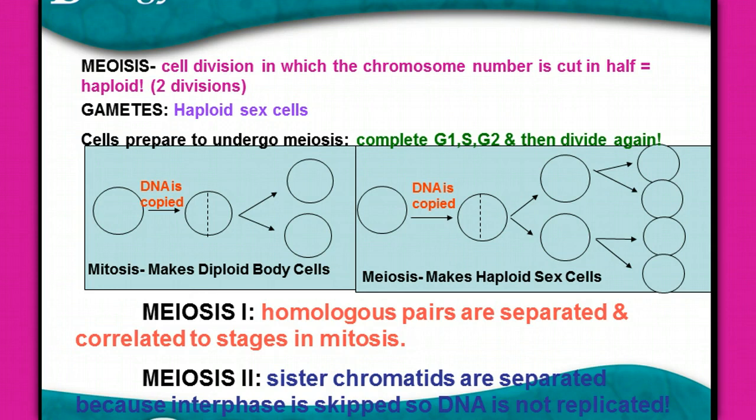Look at the definition of meiosis. There's not really a spot for you to write it in, but just jot down one thing — don't write down the entire definition. Meiosis is cell division in which the chromosome number is cut in half.